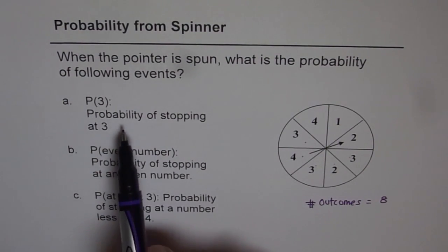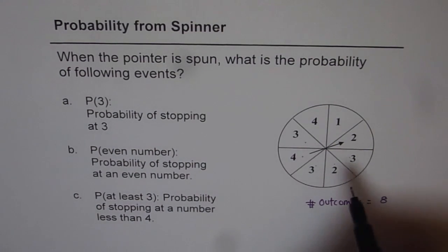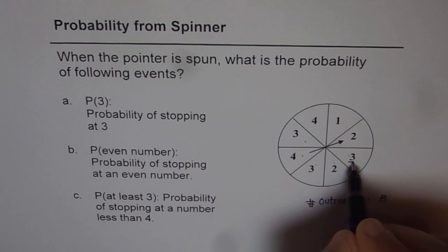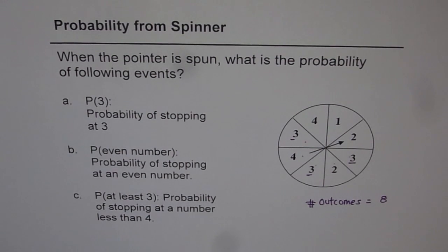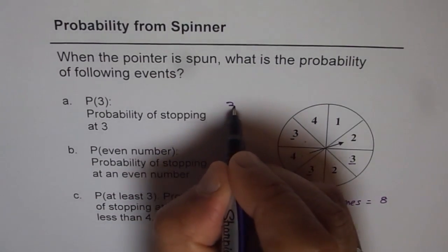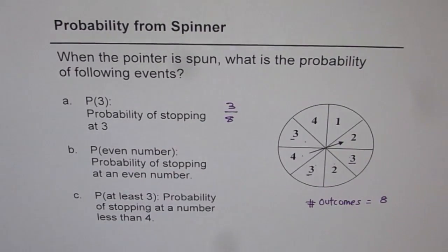So first one is probability of stopping at 3. How many 3's do we have here? So we have 1, 2 and 3. So there are 3 favorable chances out of 8. And therefore the probability of stopping at 3 is 3 over 8. So we get 3 over 8 for part A. Let's do the next one.